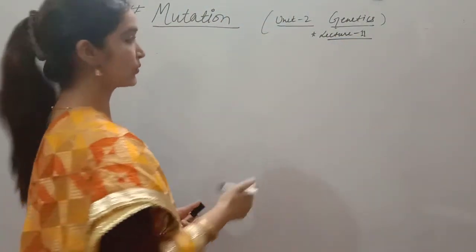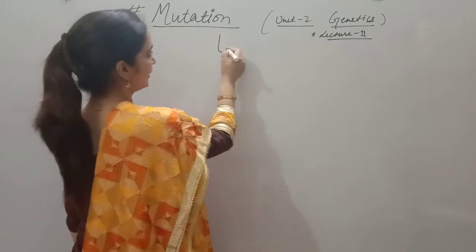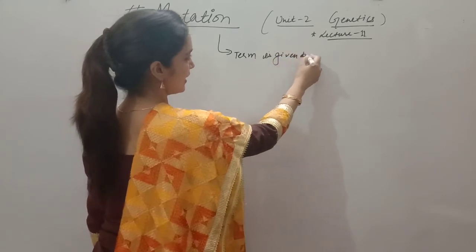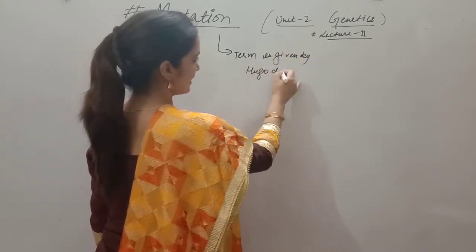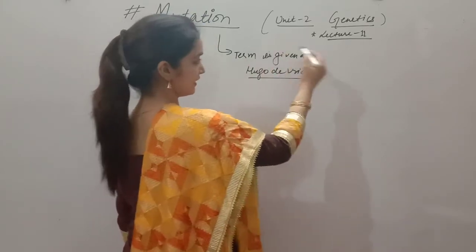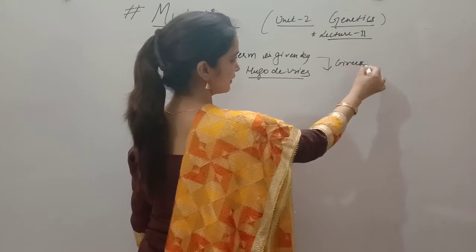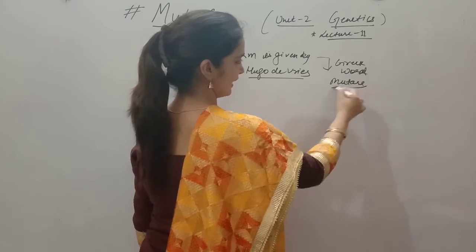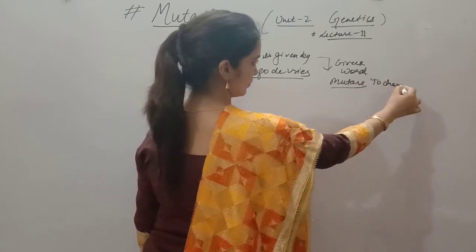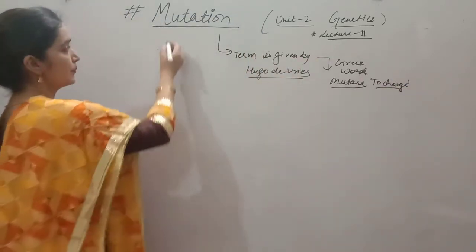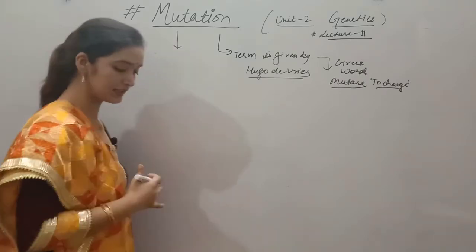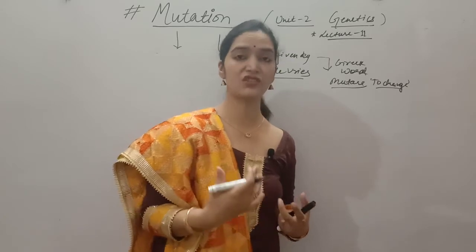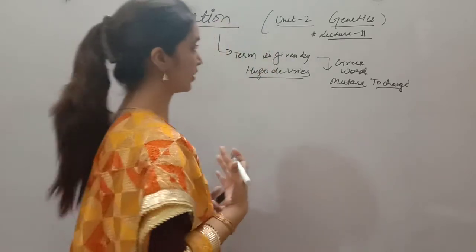What is mutation? The term 'mutation' was given by the scientist Hugo de Vries. He took the term from a Greek word 'mutate,' which means 'to change.' So what are mutations? In our DNA, in our genes, there are some sudden changes — this sudden change in our genes is called mutation.